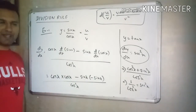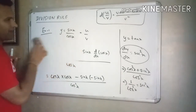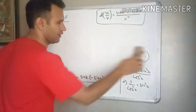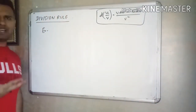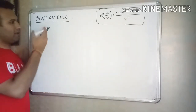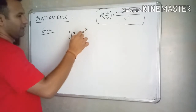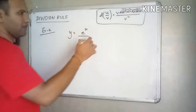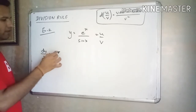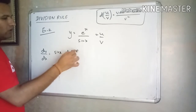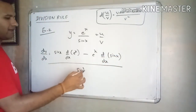Let us take a few more examples. You should memorize the formula v du minus u dv divided by v square — just repeat it 5 to 10 times and you can memorize it. Example number 2: y is equal to e raised to x by sin x. This is the first function u and sin x is the second function v. Applying the formula: dy by dx equals v du minus u dv divided by v square, which is sin square x.